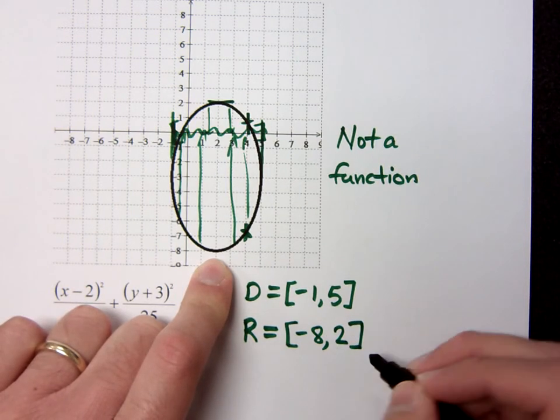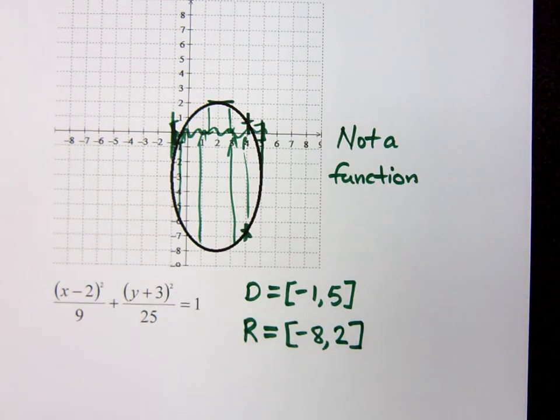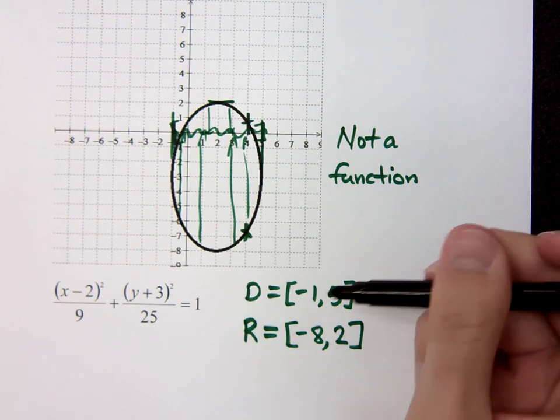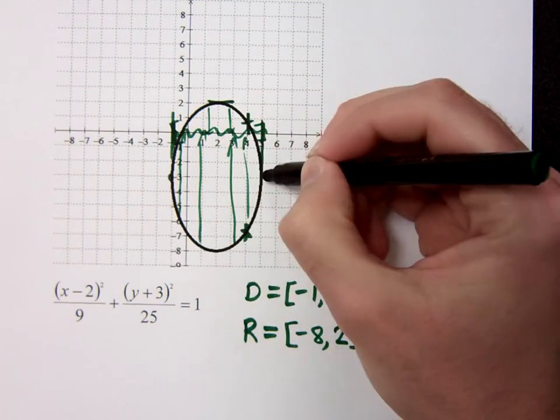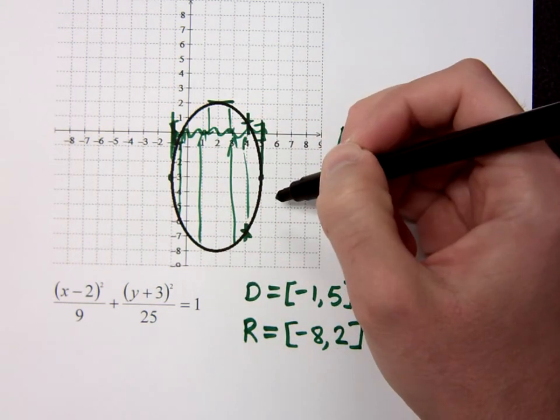Now, why am I putting brackets? Remember how we did interval notation? We have parentheses and we have brackets. What's the difference? Because they're not ordered pairs. Well, they're not ordered pairs. But I use a bracket here because I'm including those values on the endpoints, right?